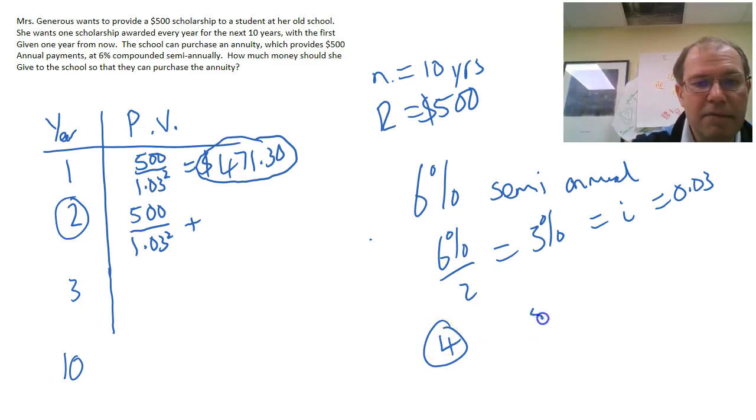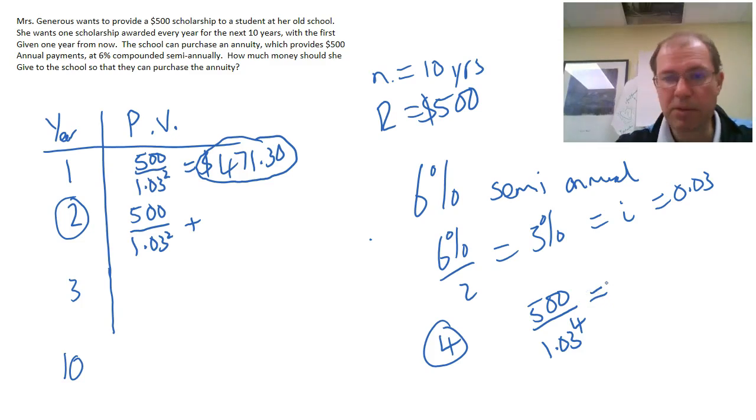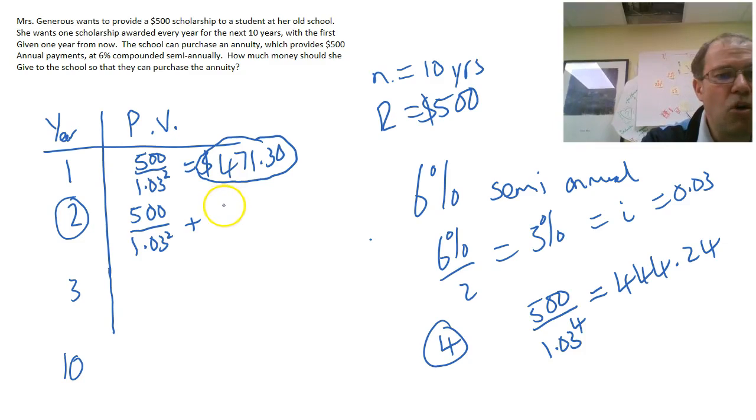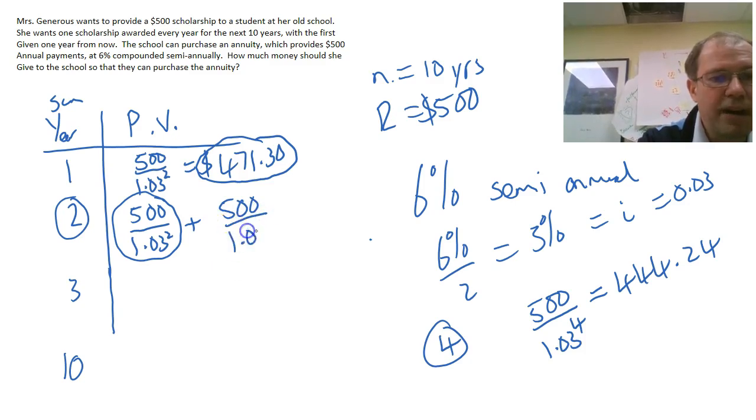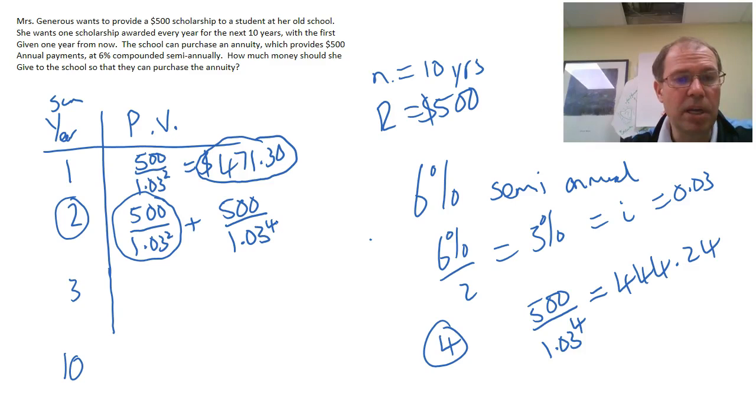I need to take the 500 and divide it by 1.03 to the power of 4, which actually comes out at $444.24. So the sum of all of the annuities would be the first year cost plus the second year one would cost 500 over 1.03 to the power of 4, which is less money. Which makes sense because it's had more time to grow from the beginning because she gives all the money up front.